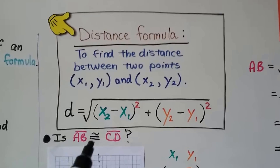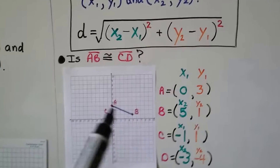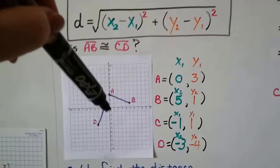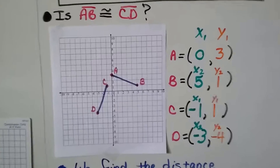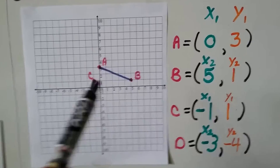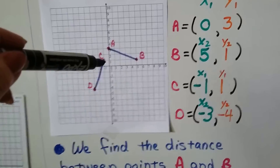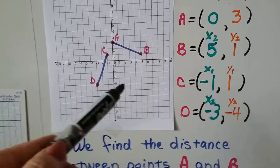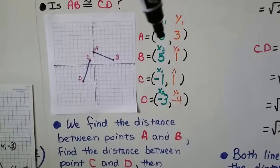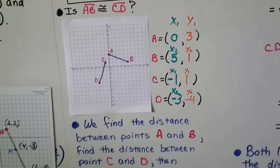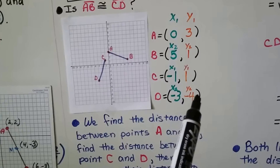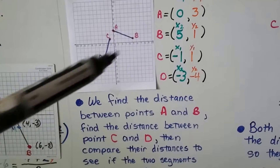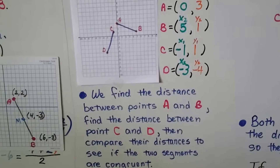We need to find out: is segment AB congruent to segment CD? We have segment AB and segment CD. Point A is at (0, 3), B is at (5, 1), C is at (-1, 1), and D is at (-3, -4). We find the distance between A and B, then the distance between C and D, and compare to see if they're congruent.